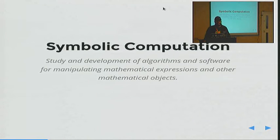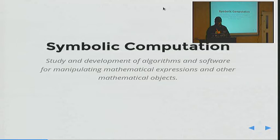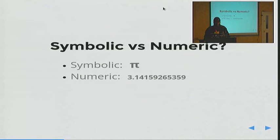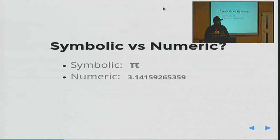Symbolic computation is the study and development of algorithms and software for manipulating mathematical expressions and other mathematical objects. To be clearer, what's the difference between symbolic and numeric? Symbolically, you represent pi as the symbol pi, but numerically you write 3.14159265359 — and if you add another thousand digits, you still don't get the exact pi. So when you have to work with these kinds of things, you want to not approximate and work with exact values.